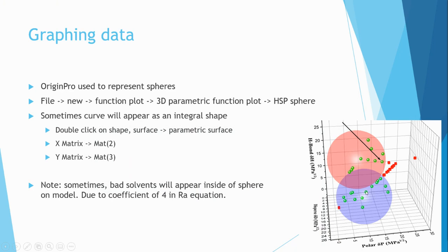Here, if these spheres were not transparent, then the green circles, which represent good solvents inside of the spheres, they would not be visible. And obviously, this specific graph wouldn't really be able to display what it should be displaying, which is that good solvents lay inside of the spheres and bad solvents lay outside of the spheres.